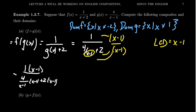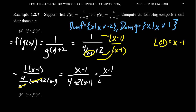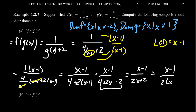The x minus 1 on the first part of the denominator cancels, which was the whole point. So the numerator becomes x minus 1. In the denominator, we get 4 plus 2 times x minus 1. Distributing that 2 gives 4 plus 2x minus 2. The 4 and the negative 2 combine, so we get x minus 1 over 2x plus 2. You can factor a 2 out of the denominator, giving x minus 1 over 2 times x plus 1. That is the composite of the two functions.